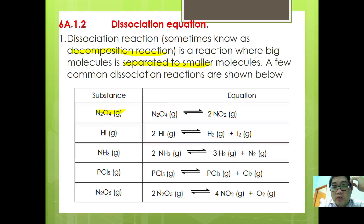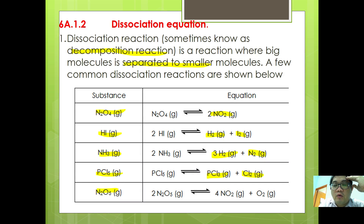So you have N2O4 dissociate to become NO2. Hydrogen iodide dissociates to become hydrogen plus iodine. Ammonia dissociates to become hydrogen plus nitrogen. PCl5 dissociates to become PCl3 plus Cl2. And N2O5 dissociates to become 4NO2 plus O2.